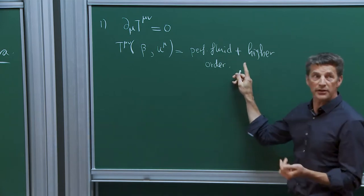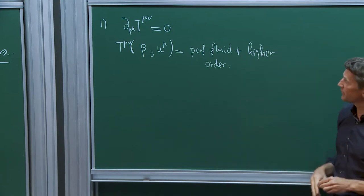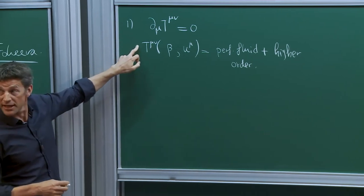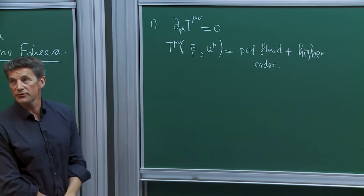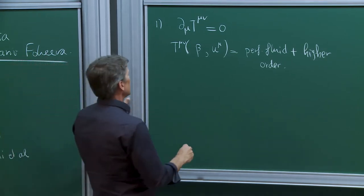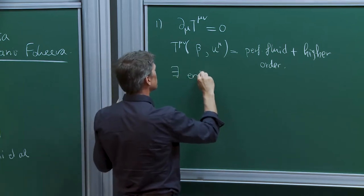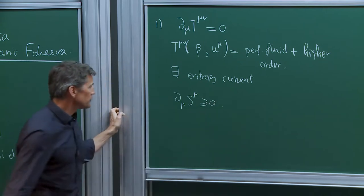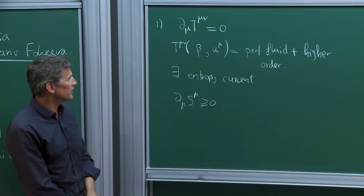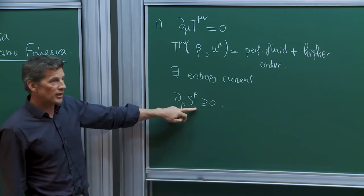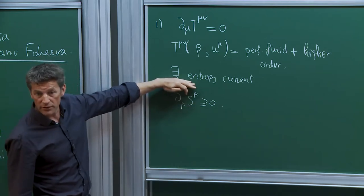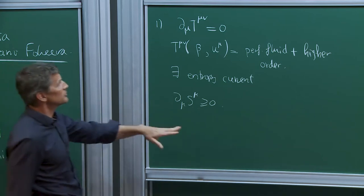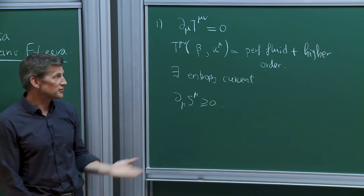In particular, there are all kinds of coefficients appearing — the transport coefficients of the theory, viscosity appearing, etc. This is a bit of a phenomenological approach because you write down the most general stress-energy tensor compatible with the symmetries of the problem. The other thing you insist on is the existence of an entropy current — it's not a conserved current, but its divergence is non-negative — and this guarantees only entropy production. By imposing this, you find bounds on the various coefficients that appear in this gradient expansion of the energy-momentum tensor.